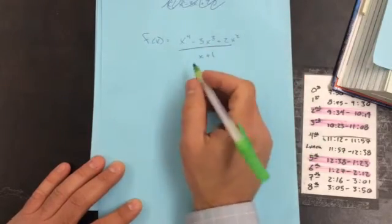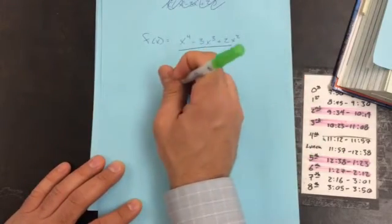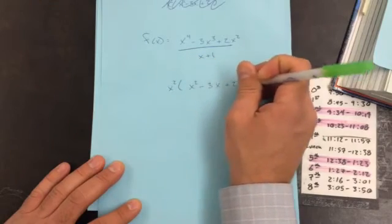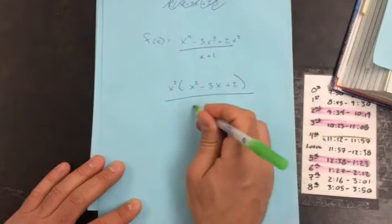Just kidding. This is the original. Okay. I can factor out an x squared. So it's going to become x squared times (x squared minus 3x plus 2), still over x plus 1.